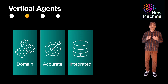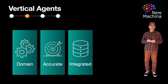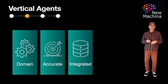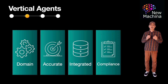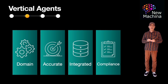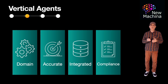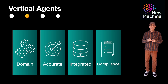They will also have deep integrations into existing domain systems. Vertical agents will include integrations with domain-relevant tools or APIs, such as electronic health records in healthcare or CRMs within a sales organization. And finally, they will be knowledgeable about their respective industry compliance and regulations. They will be built with domain-specific regulations in mind, such as HIPAA for healthcare or GLBA in the financial industry.